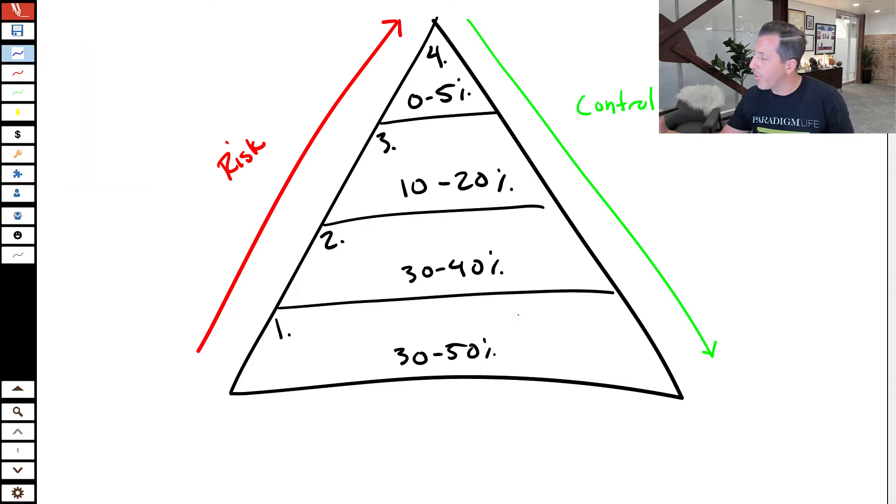So let's talk about some criteria. Usually in this foundational tier, here's some of the criteria we like. It's guaranteed. It's liquid, meaning you have really easy and quick access to it. We like to see a prudent return. Sometimes tier one is just simply cash.